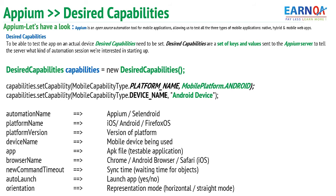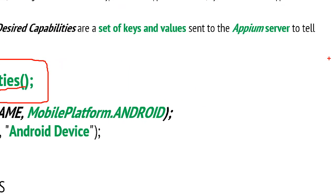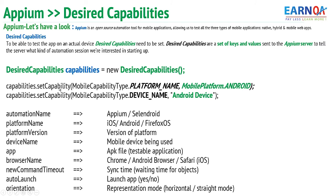Once it is done, on that capabilities object we set a capability — the platform. If it is Android we specify Android, if it is iOS we specify iOS. We also need to specify the device name, the platform version, the device type, browser name, and synchronization timeout. These are all the different capabilities that can be specified. Desired capabilities is a class and we declare it with an object reference that initiates the class constructor.